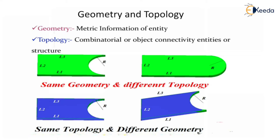Geometry is a metric information entity, while topology is a combinational or object connectivity entity — a structure. As shown in the figure, if you observe, it's the same geometry but the topology is different. In the first figure, L1, L2, and L3 create one surface — that surface is the same in both cases — but there is a rotation cut part of curve R and a solid part of curve R, making a topology difference.